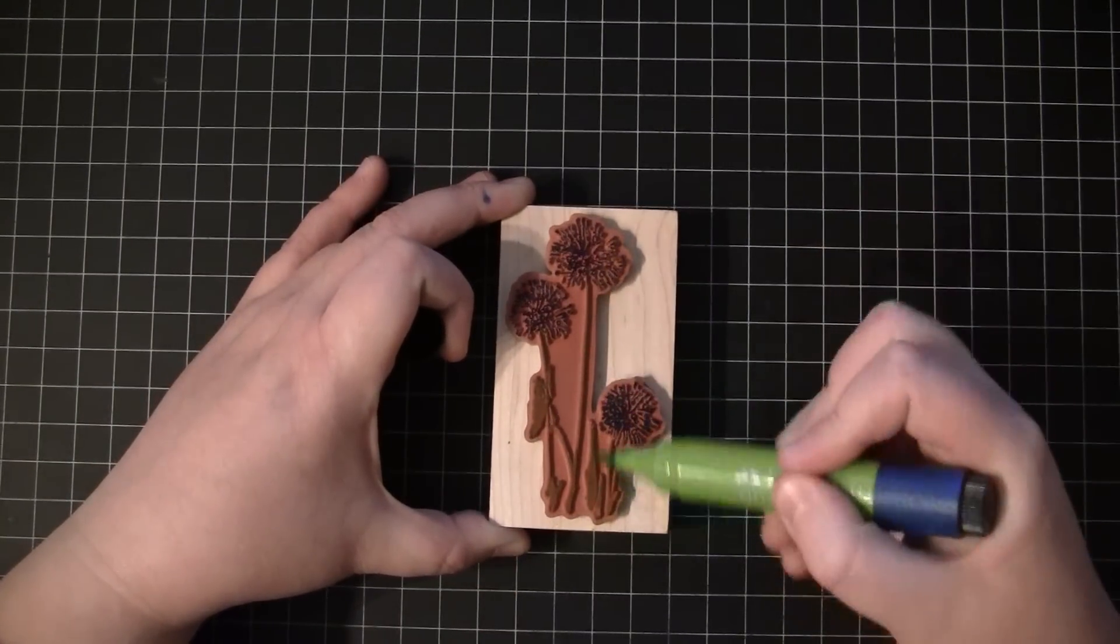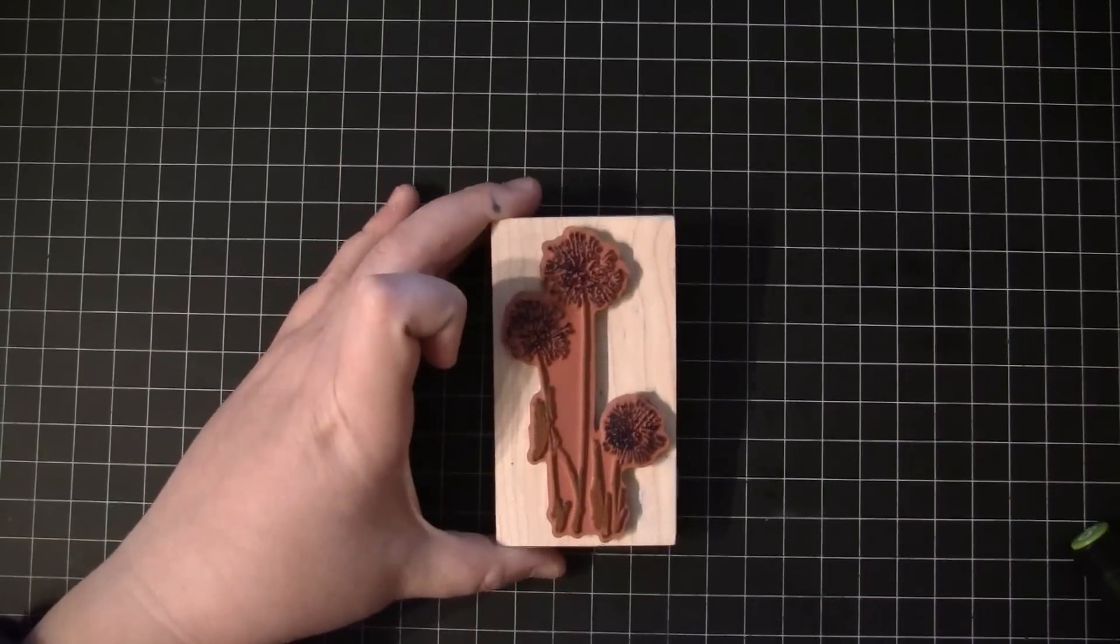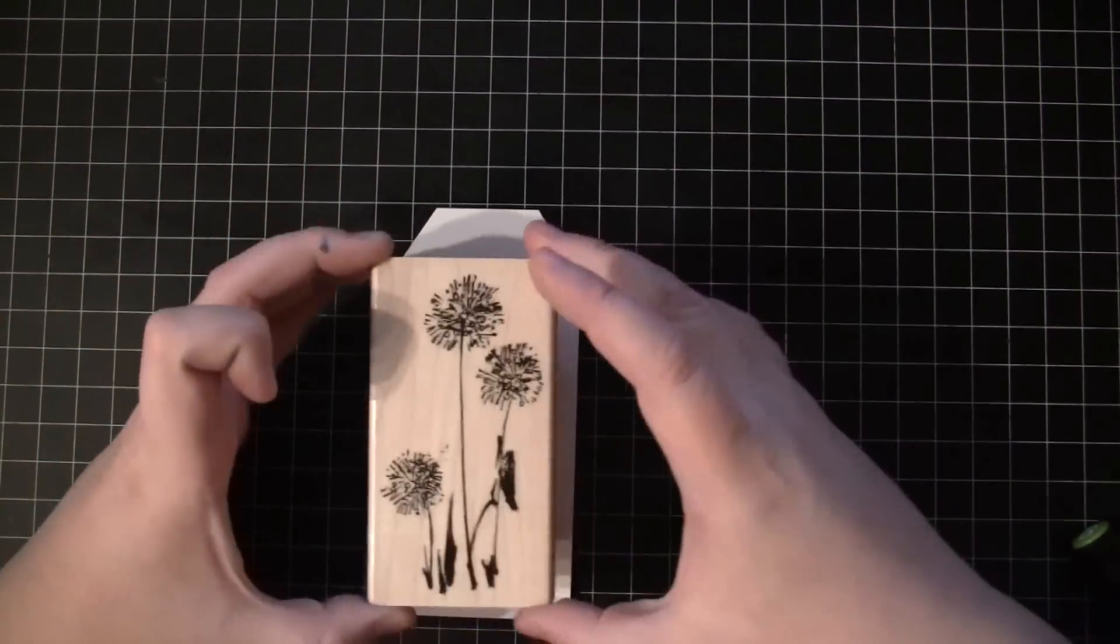Adding the green for the stems, a light mist with water, and stamp straight down.